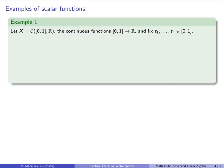Let's do some examples. Let's begin with the space of continuous real-valued functions whose domain is [0, 1], and let's fix n different points in the domain. The following are all linear scalar functions. The first one is just the evaluation function at one of these points. So L of f equals f of t1.